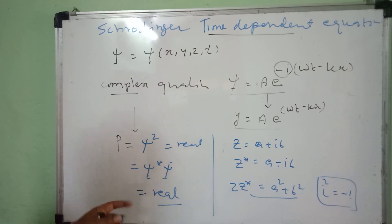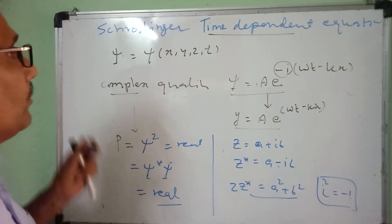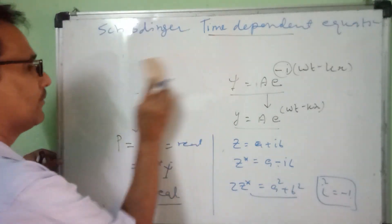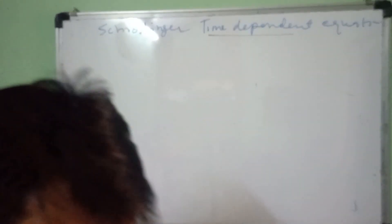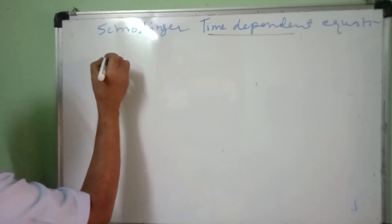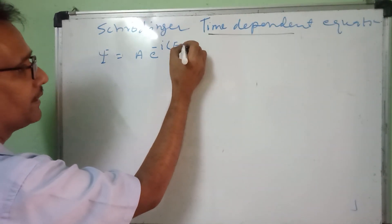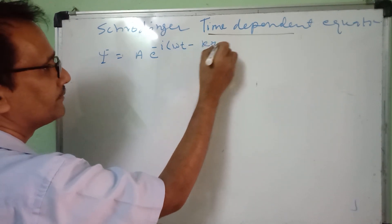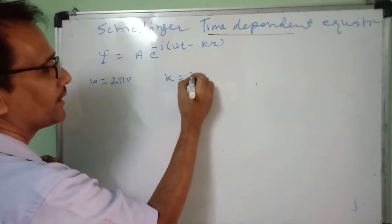So psi squared is the real quantity, and p is the probability of finding a particle at a particular position at a particular time per unit volume. To derive the Schrödinger time-dependent equation, the first step is to write psi as A·e^(−i(ωt − kx)), where ω = 2πν and k = 2π/λ.